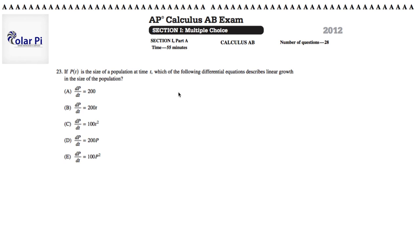So p of t is the size of a population at time t. And what we want is a differential equation, one of the answer choices, that describes linear growth, pay attention, in the size of the population. So the size of the population was p of t.